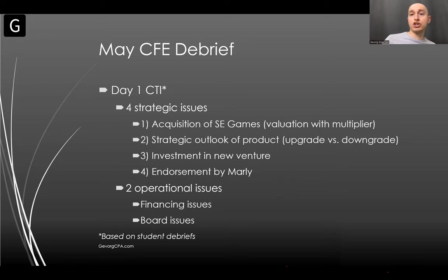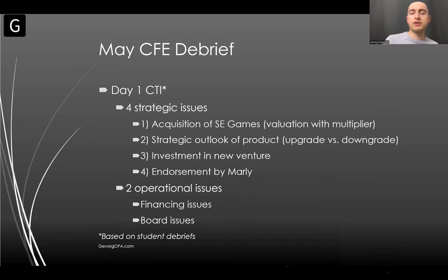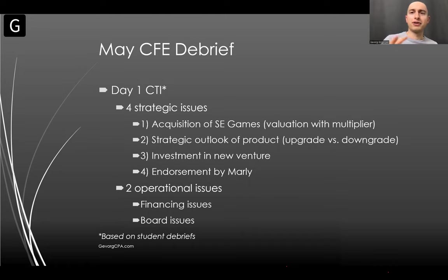The board of directors were butting heads and you had to discuss in WIR format what the issues were and what the recommendations were to improve it. Financing issues were more about how to raise financing to do those investments. My thought on day one for CTI is that it was pretty similar to what you've seen before. For September, I'm predicting about the same: four strategic issues and about two operational issues, touching on acquisition, strategic issues, investment in new venture, endorsements.